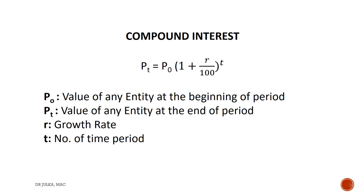The value of any entity at the end of the period equals the value of the entity at the beginning of the period, multiplied by 1 plus growth rate divided by 100, raised to the power of time. P0 denotes the value of the entity at the beginning of the period, Pt denotes the value at the end of the period, growth rate is denoted by R, and the number of time periods is denoted by T.